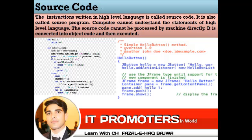Source code is a code that you can easily understand and access. The instructions written in high-level language are called source code. The computer cannot directly understand high-level language — that is, it cannot directly process source code. Source code cannot be processed by the machine directly.